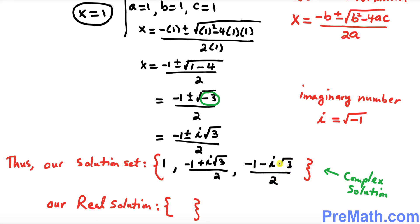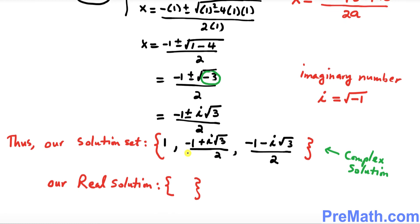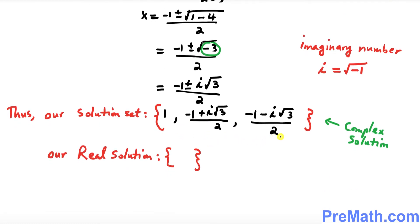Just keep in mind that this solution set is a complex solution because of the imaginary number i. If you are looking for just the real solution, the real solution is simply x equals 1, and that's pretty much it.